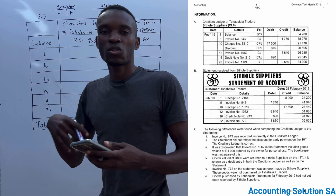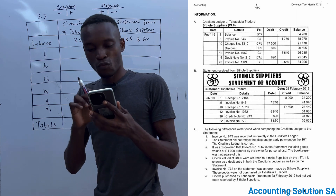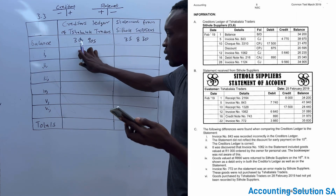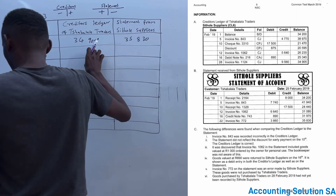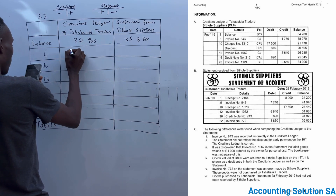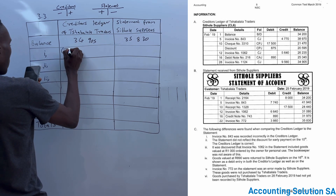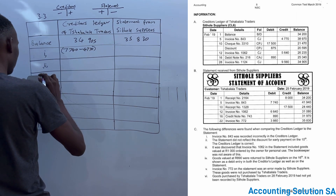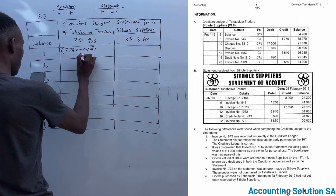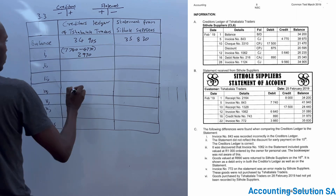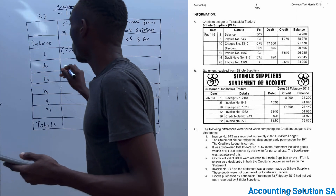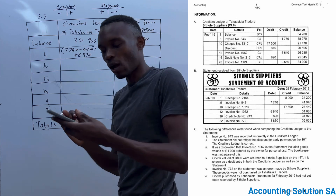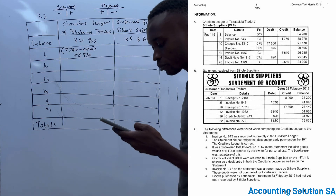We need to add the difference so that it equals R7,740, because the transaction says it was incorrect on the creditors ledger and we have to rectify it here. The calculation is R7,740 minus R4,770, giving you R2,970. You show this as a plus because you are adding on the credit side.